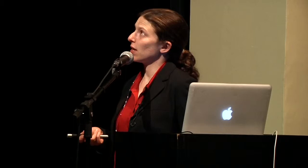Here is a simplified model of how an activating KIR will work, to share some data implicating the KIR 3DS1 molecule in HIV control. An activating KIR is present on an NK cell. If there's no interaction with a CD4 T cell's MHC molecule, nothing happens and the NK cell leaves the CD4 target alone. But when the KIR molecule binds to the HLA molecule on a CD4 T cell, this interaction will promote killing.